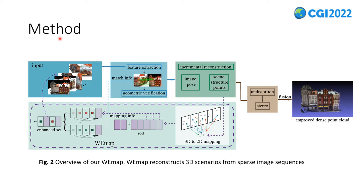Let's take a look at the overall method. As shown in Figure 2, VMAP reconstructs 3D scenarios from sparse image sequences. The upper part is the initial reconstruction based on CoreMAP. We map the 3D points in the initial point cloud generated by the sparse reconstruction to the feature points of the corresponding 2D images. Then the number of feature points in an image corresponding to points in the initial point cloud is counted and used to measure the contribution of that image. Images with fewer feature points correspond to weak regions in the initial point cloud; therefore, they are regarded as low contribution and should be added to the enhanced set.